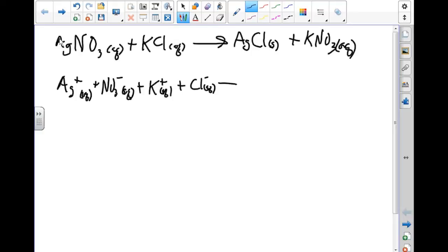When we're writing down our products, we want to make sure we keep the solid together. It does not separate into its ions. So we write our AgCl solid, plus our K⁺, which is aqueous, plus our NO₃⁻ with a negative charge, and it is aqueous.